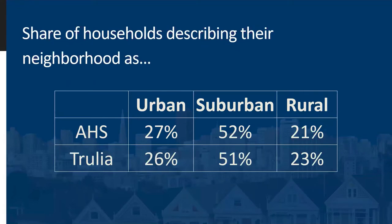To give some additional context to these results, let's compare them to two other non-governmental surveys. First, we compare the AHS results to those from Trulia, which was the catalyst for some of HUD's latest efforts on this topic. Trulia is an American home and neighborhood site that helps buyers and renters find homes and neighborhoods across the United States. Data from Trulia's 2015 survey show that 26% say their neighborhood is urban, 51% say suburban, and 23% describe it as rural — almost identical to the 2017 American Housing Survey's findings.